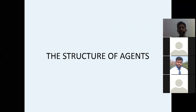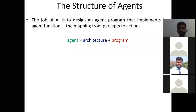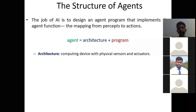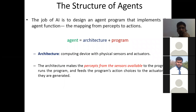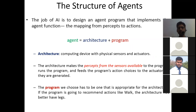We have seen different types of structures of an agent. A structure consists of architecture plus program — that is the agent. Architecture is a computing device with physical sensors and actuators. The architecture makes the percept from the sensor available to the program, runs the program, and feeds the program's action choices to the actuators. The program we choose has to be appropriate for the architecture — if the program recommends actions like walking, the architecture must have legs to perform that action.